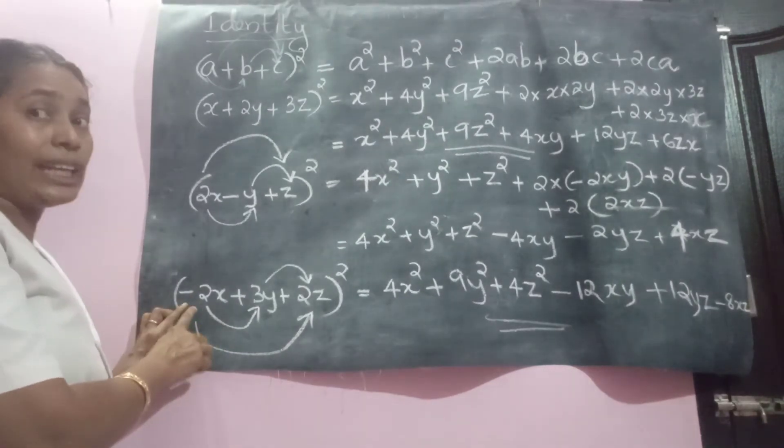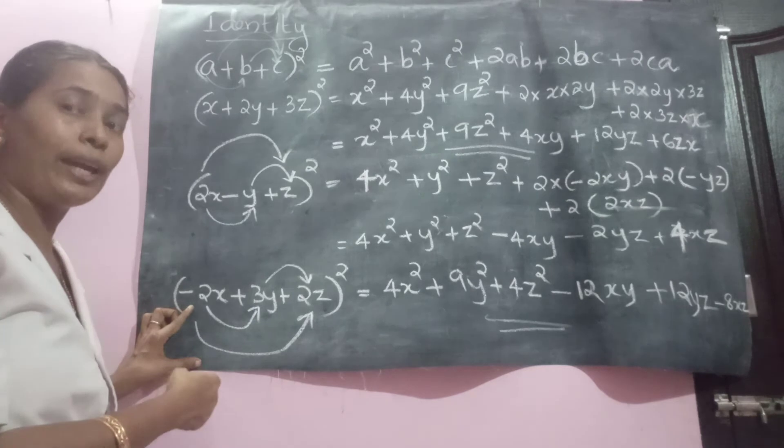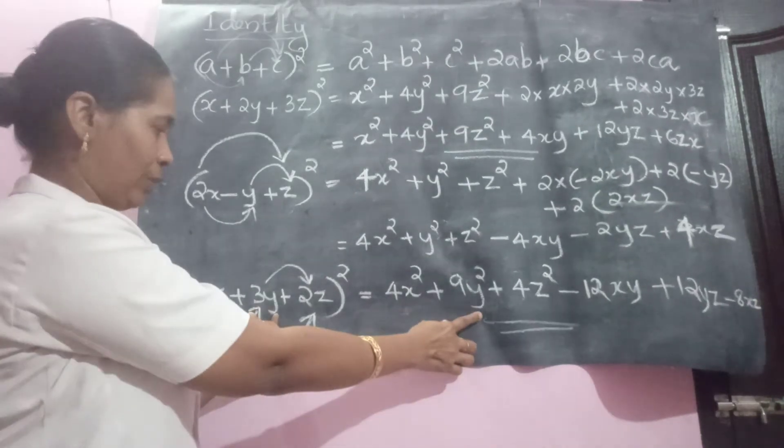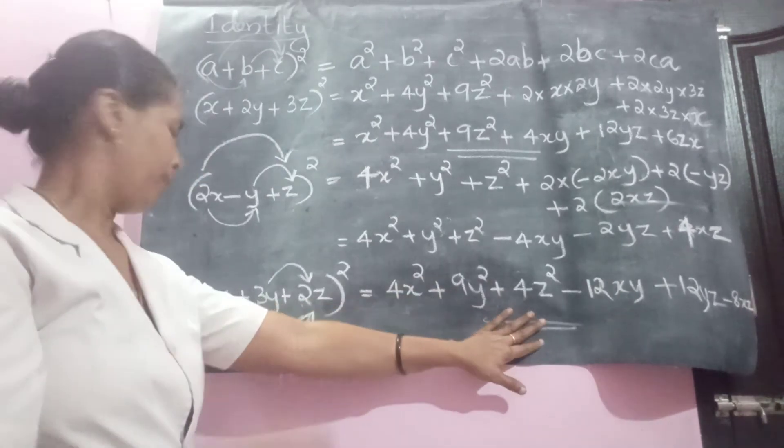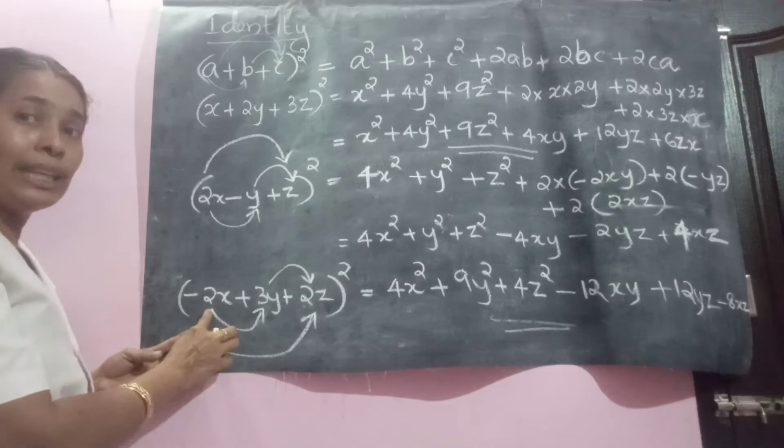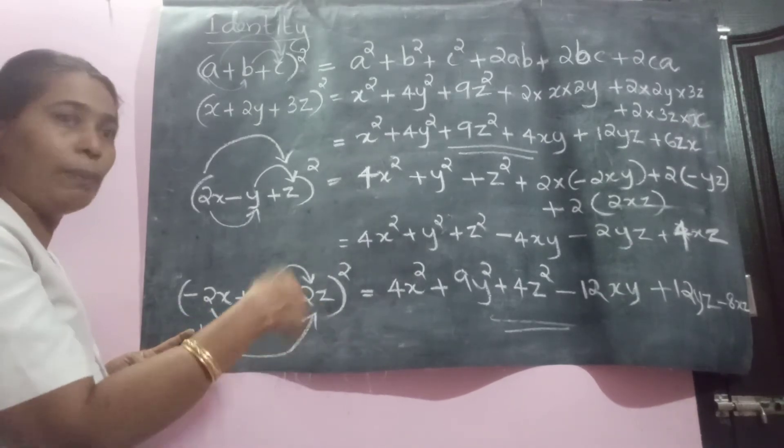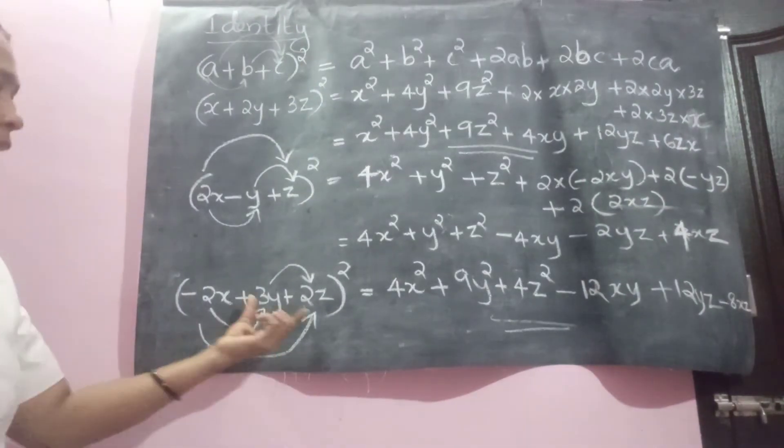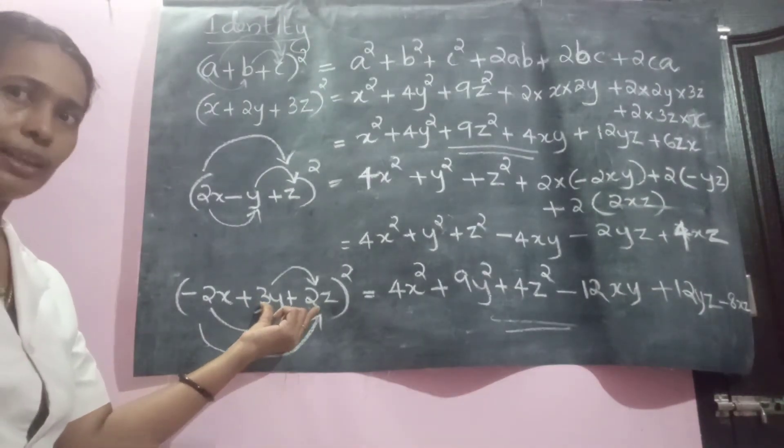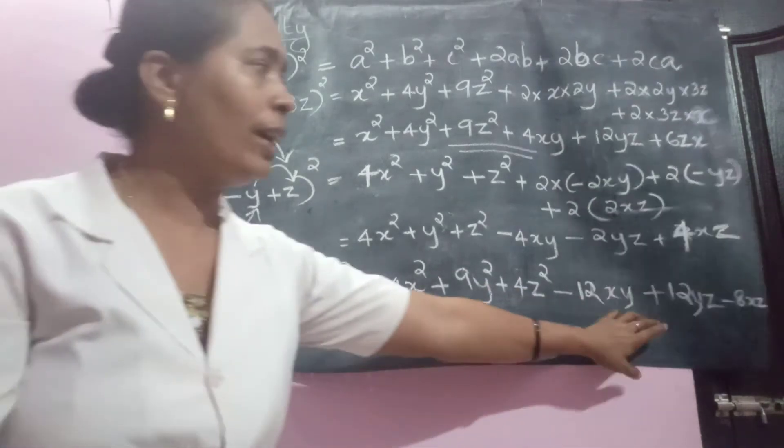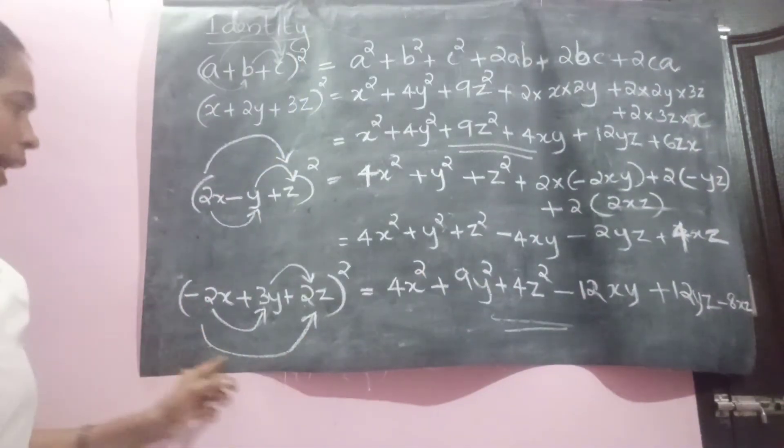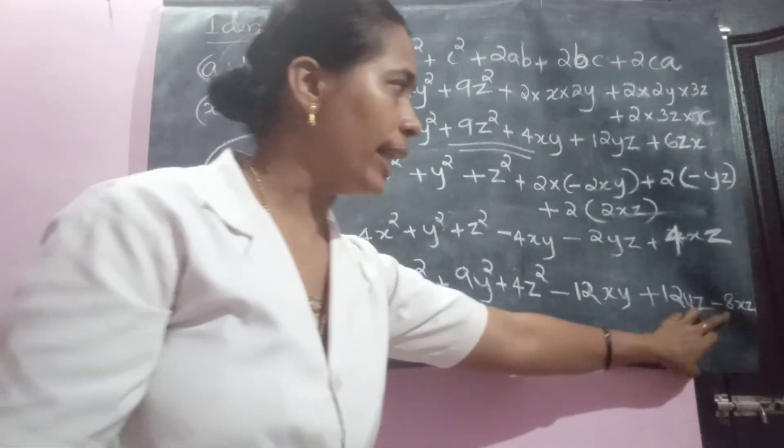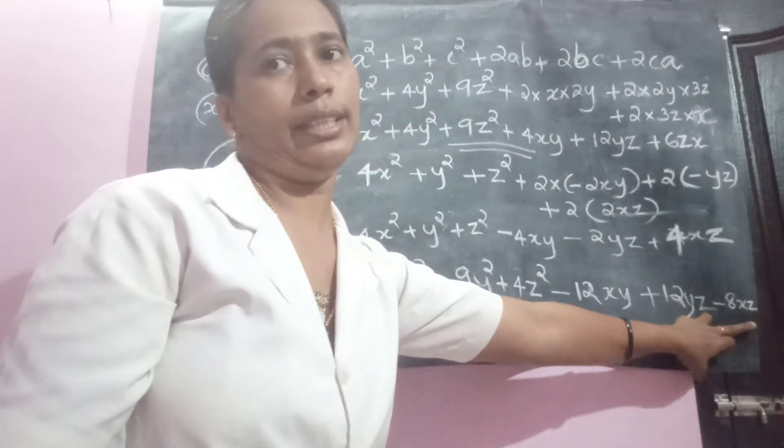First term, negative 2X. But squaring, what will happen? 4X square positive. Plus 3Y, 9Y square. Plus 2Z, 4Z square. And multiplication of first two terms is negative 6XY. Double means negative 12XY. Then this become 6YZ. Double means 12YZ positive. And but the last term first when you take. Negative 4XZ. Double that one. So, negative 8XZ.